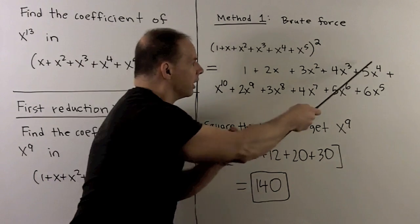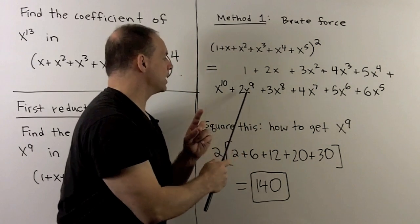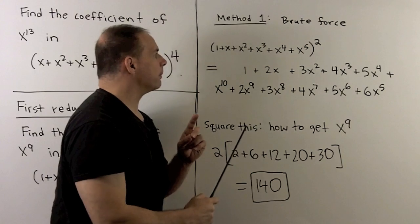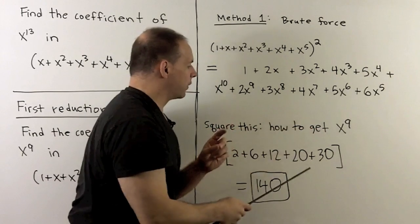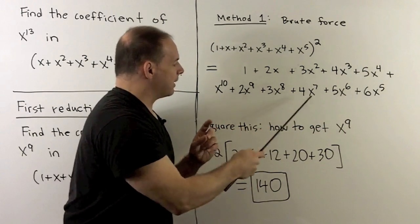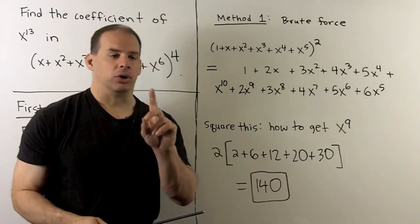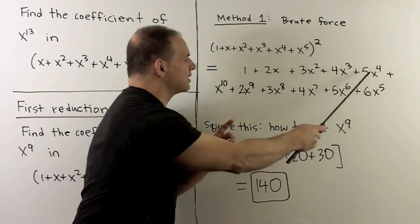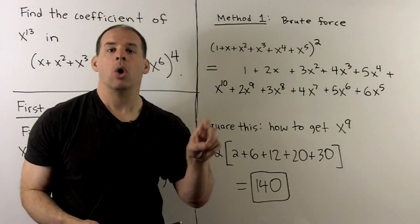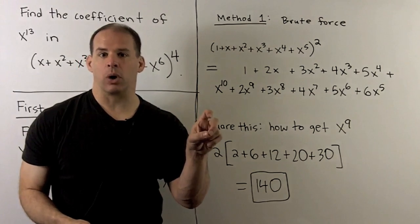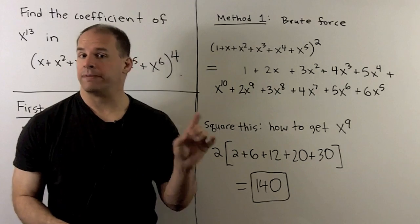When we take this quantity squared and multiply it by itself again, we only care about terms that have x to the ninth power — we're just matching exponents that sum up to nine. Multiplying the corresponding pairs: I get 30, 20, 12, 6, and 2. But note for instance if I multiply this by itself there are two ways to get that 30 — five from the first times six from the second, or six from the first times five from the second. So we take all these numbers and multiply by two, and that gets us to 140 as our final answer.